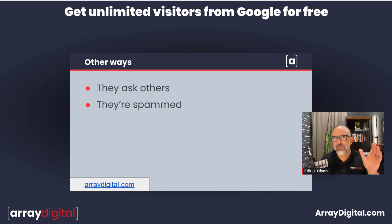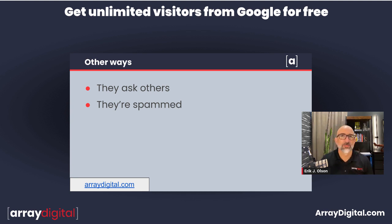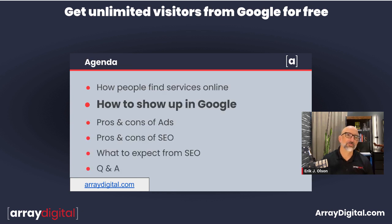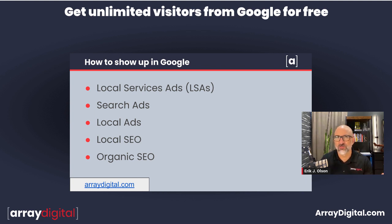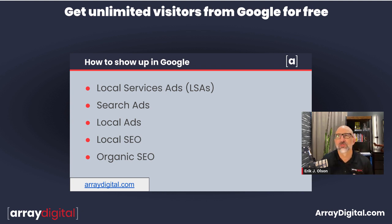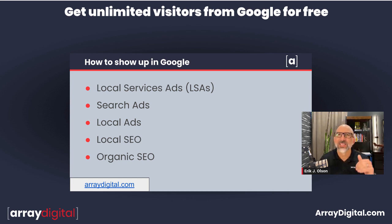Another way people find you is through spam — I probably get 20 pieces of spam every single day. So that's how people find your services. Now, how can you show up in Google? Here's a list of the different parts of the search results page, also called a SERP — search engine results page. There are different components, and I want to step you through the different places you can get seen in Google.